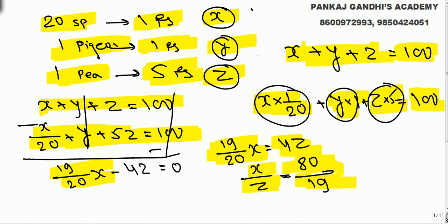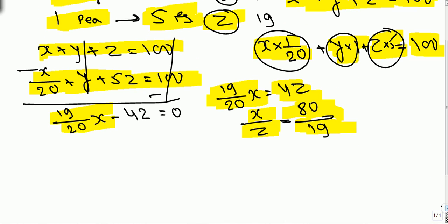What we got here is x as to z ratio is 80 as to 19. Now the problem is sparrows or pigeons cannot be in points. What we got is x as to z, it has to be 80 as to 19.